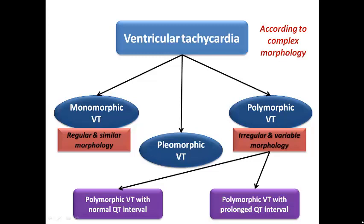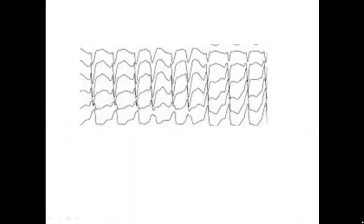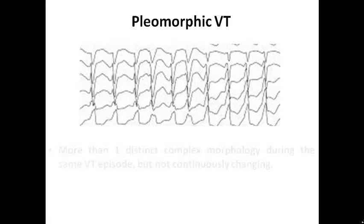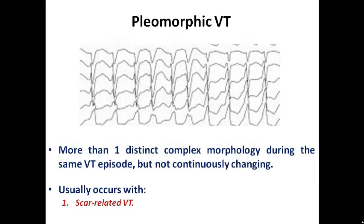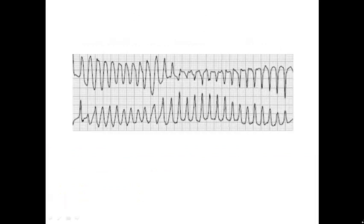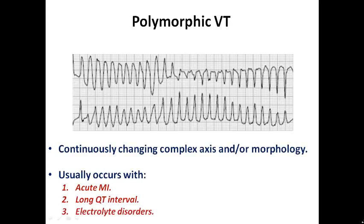For example, in this ECG we can see irregular wide complex tachycardia with at least 2 or 3 complex morphologies — this is pleomorphic VT, showing more than one distinct morphology during the same episode but not continuously changing, and it usually occurs with scar-related VT. In another example, there are multiple and continuously changing complex morphologies with changes in axis — this is polymorphic VT, which usually occurs with acute MI, long QT interval, and electrolyte disorders.